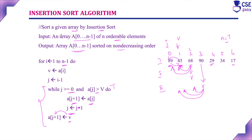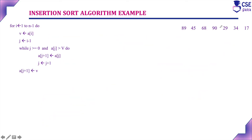Now we will implement this logic with an example. Consider the given array with elements at positions A of 0, A of 1, A of 2, A of 3, A of 4, A of 5, and A of 6. The total n value is 7 elements from index 0 to 6. We will implement the algorithm on this array.